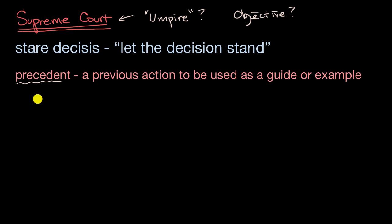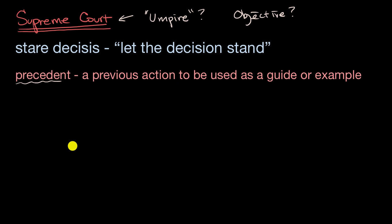And because the executive branch — in particular the president — can appoint Supreme Court justices, there are definitely examples in history of changes in politics having long-term effects on changes in the Supreme Court.